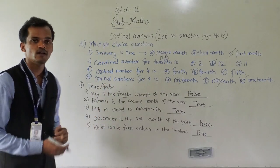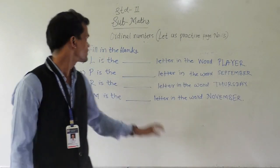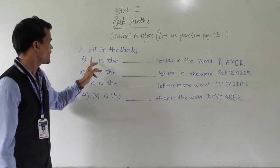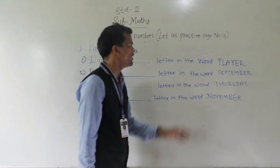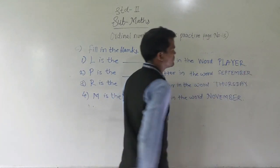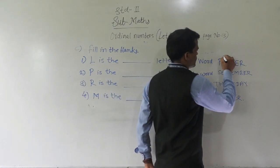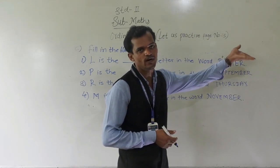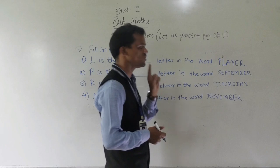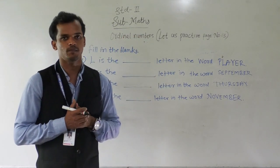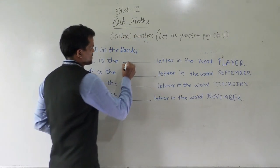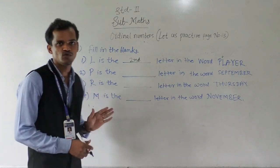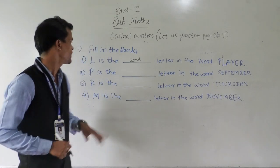Solve this question in your test book. 6th question: fill in the blanks. See, first one: L is the blank letter in the word 'player'. Where is the L? Counting the positions — L comes second in the word player. So write here: second. I am showing the first four examples, and the remaining you have to solve in your test book.